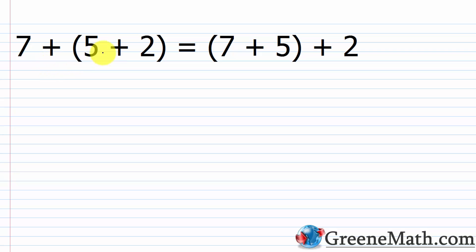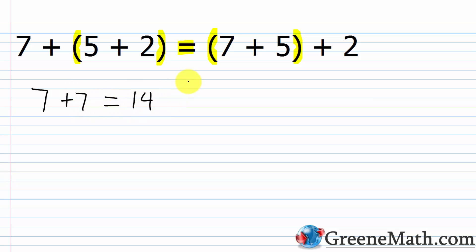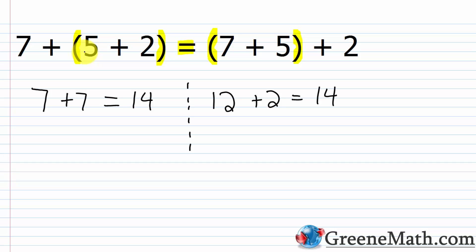Another example: seven plus (five plus two) equals (seven plus five) plus two. On the left, five plus two is seven, giving seven plus seven equals fourteen. On the right, seven plus five is twelve, and twelve plus two also equals fourteen. We grouped differently but got the same result.